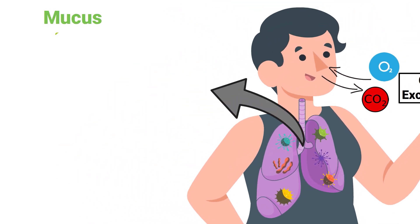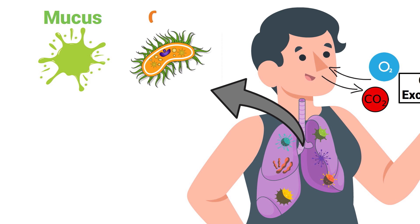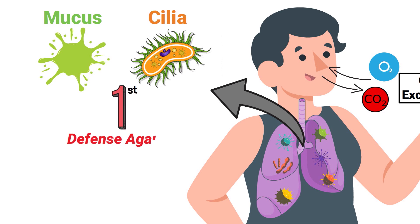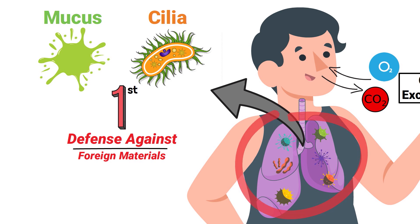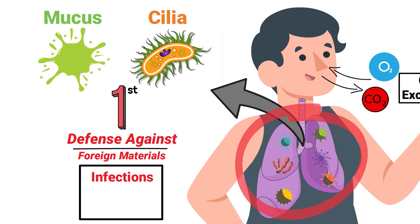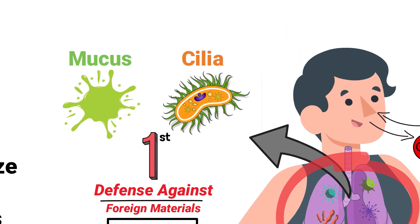This is where mucus and tiny hair-like structures known as cilia play a role as the first line of defense against foreign materials. Without them, particles could enter the lungs and lead to different types of infections or diseases.